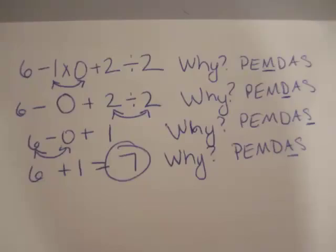The problem, this is how you solve it. 6 minus 1 times 0 plus 2 divided by 2. The first thing you would do is multiply 1 by 0, which equals 0. And why do we do that? Because multiplication comes first in PEMDAS when there is no parentheses or exponents.